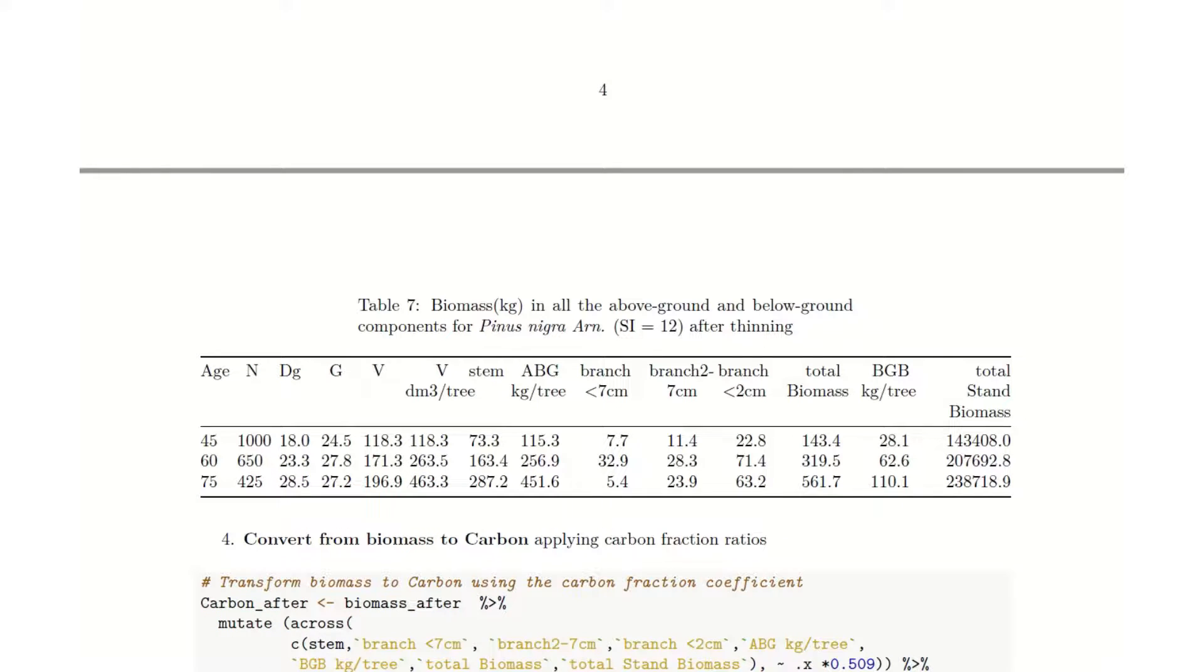Finally, this is the output that we obtained from running the snippet of code. As you can see, we have obtained biomass values for each pool in kilograms.